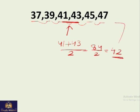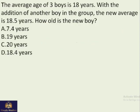Another question: The average age of three boys is 18 years. With the addition of another boy in the group, the new average is 18.5. How old is the new boy? Now there can be two methods to solve this problem. Let's first do the first one. Average of three boys is 18, so average is sum over number of terms.